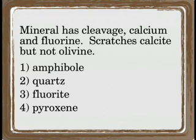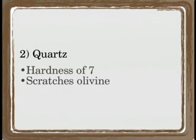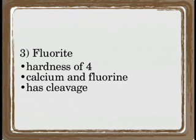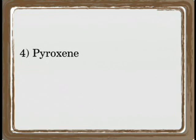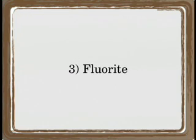Let's go through the answers. Choice 1 is Amphibole. Amphibole does have cleavage and it does contain calcium, but it does not contain fluorine. Choice 2 is Quartz. Quartz has a hardness of 7, which would scratch olivine, so that must not be the answer. Choice 3 is Fluorite. Fluorite has a hardness of 4, which is in between calcite and olivine. Fluorite also contains calcium and fluorine, and it has cleavage — so Fluorite is probably your answer. But just to be sure, we check Choice 4, Pyroxene. Pyroxene has a hardness of 5 to 6 and has cleavage, however it does not contain fluorine. So indeed, Choice 3, Fluorite, is your answer.